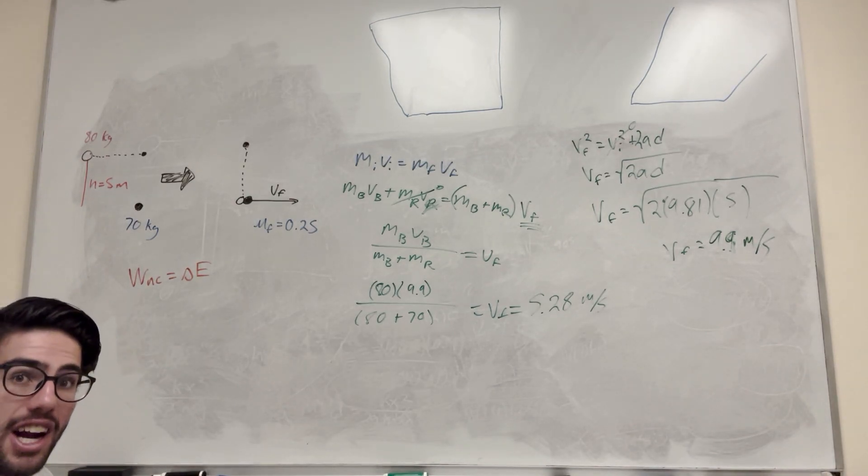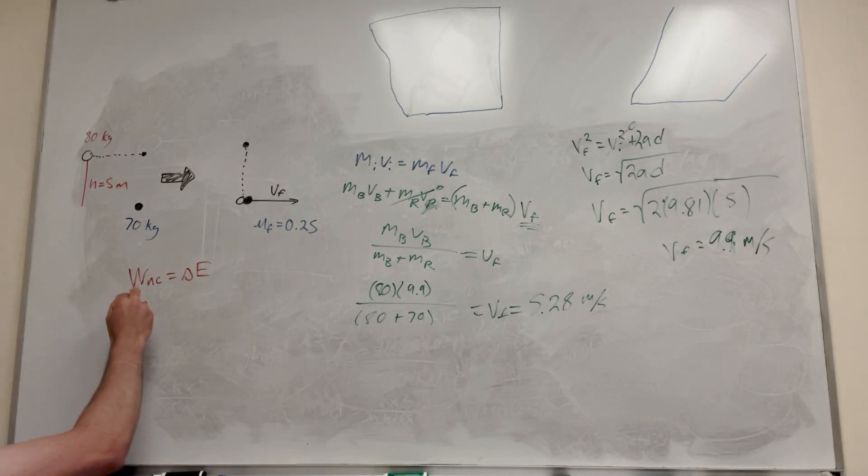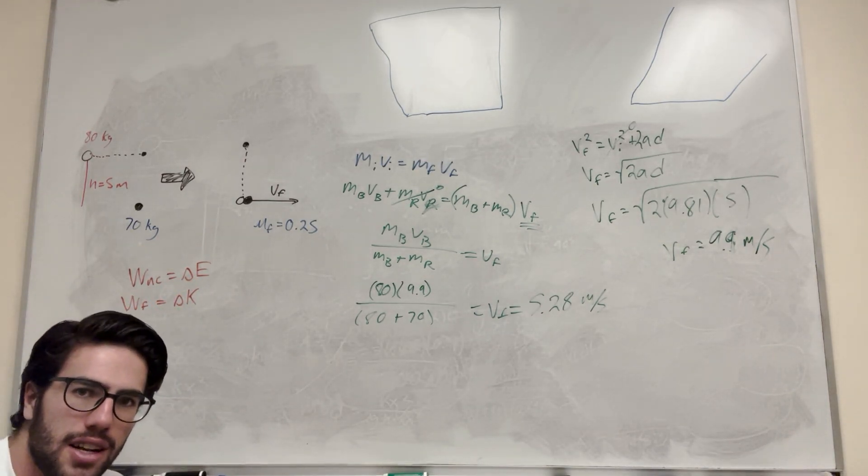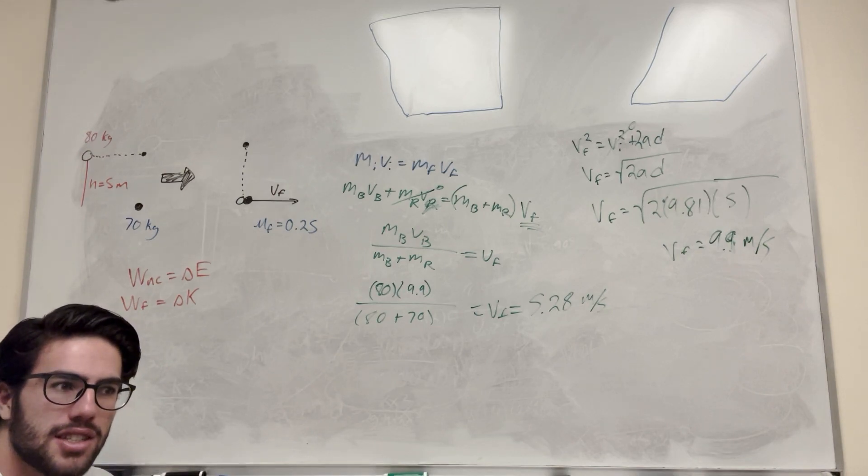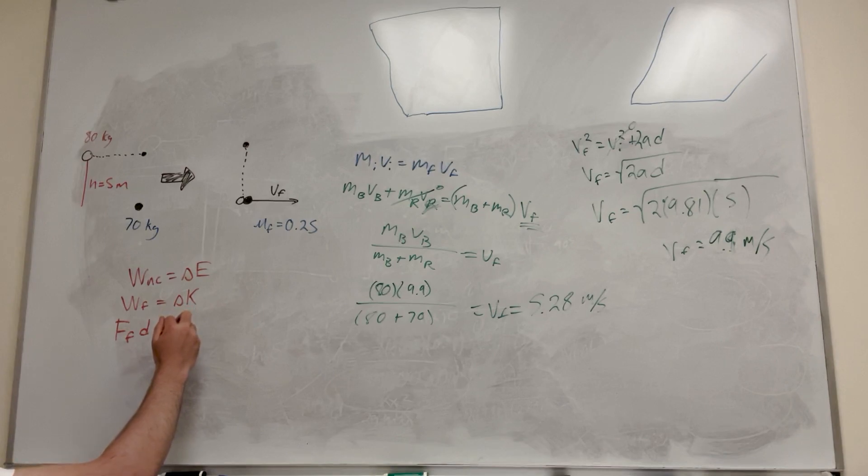But basically it says that work non-conservative is equal to change in energy. So work non-conservative, that's your stuff like friction and air resistance. So in this case, we actually do have friction. So that's going to be work of friction. And then our change in energy, well, we're going to have a change in kinetic energy. And I think that's all we're going to have, right? Because there's no springs. There's no change in height. There's no gravity. So yeah, this is all our equation is going to look like. So work of friction, of course, is force of friction times the distance that they go. And of course, there you go. There we have our distance. So that's nice. And change in kinetic energy is going to be kinetic energy final minus kinetic energy initial.